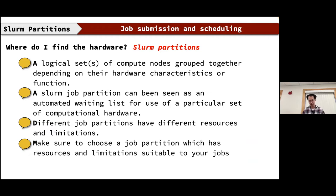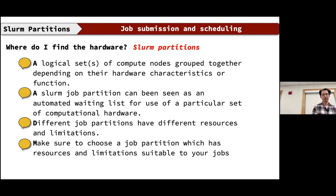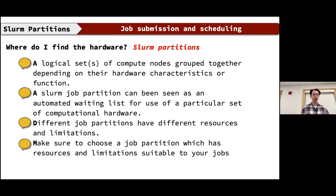A SLURM partition is a logical set of compute nodes grouped together by hardware characteristics or function — think of it as an automated waiting list for a particular set of computational hardware. Jobs that are queued sit in that partition waiting to be executed. Different partitions have different resources, limitations, and policy controls. When you submit a job, make sure to choose a partition with resources suitable to your job.